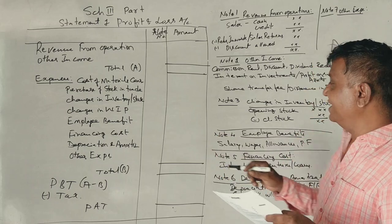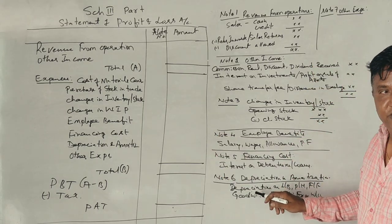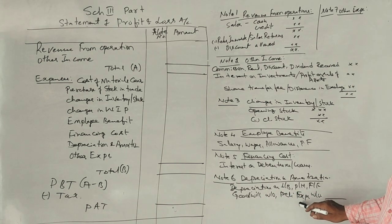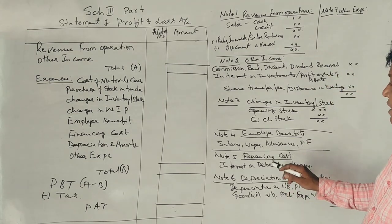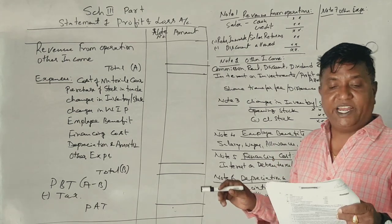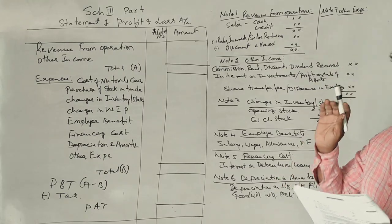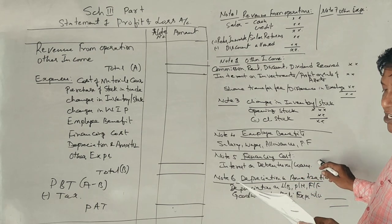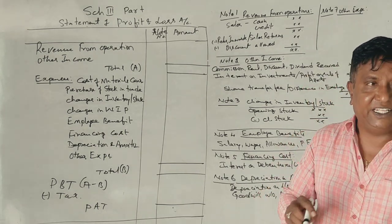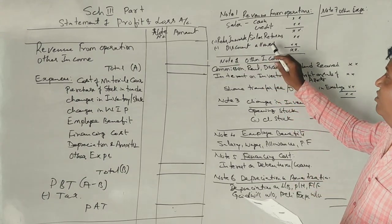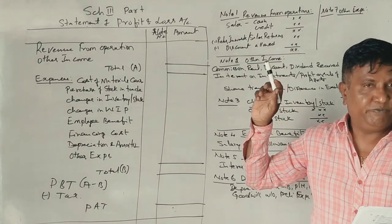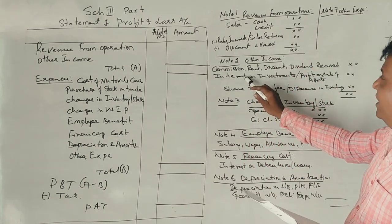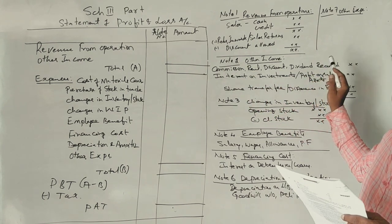The first question is, Depreciation on Fixed Asset goes under Depreciation and Amortization. Preliminary expenses written off, same. Goodwill written off, preliminary expenses written off. Salary to Employees goes under Employee Benefits. Rent of Showroom goes under other expenses. Interest on loan is financing costs, interest on debentures, loan. Discount received from Supplier - discount received. Sales is minus. Discount allowed. Discount received is not other income. Commission, rent, discount, dividend received goes under Other Income.